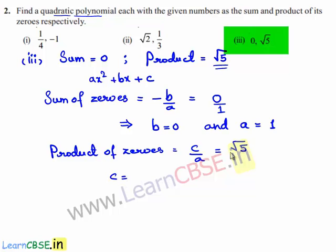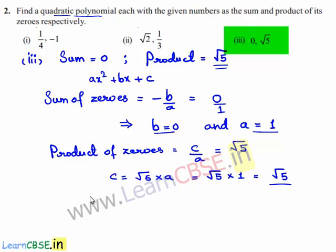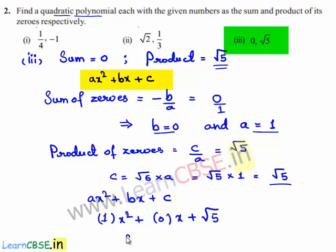So we can write c equal to, on cross multiplication, c is equal to √5 times a. But we found the value of a to be 1, so c = √5. Finally, a = 1, b = 0, and c = √5. Substituting in ax² + bx + c, we get 1·x² + 0·x + √5, which equals x² + √5. Therefore, the required polynomial is x² + √5.